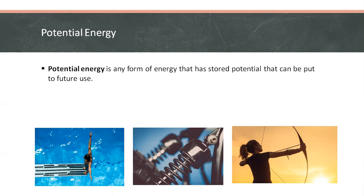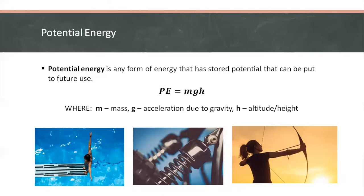Another form of potential energy is that due to the height or elevation of an object. This is what we call gravitational potential energy, which has a formula of potential energy equals mass times acceleration due to gravity times height or altitude or elevation.